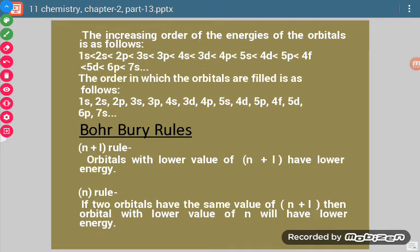This is the order of energies of orbitals: 1s < 2s < 2p < 3s, and so on. Since this is the energy order of orbitals, we fill electrons in the same order — first 1s, then 2s, then 2p, and so on. Now the question comes: how do we know which orbital has higher or lower energy?